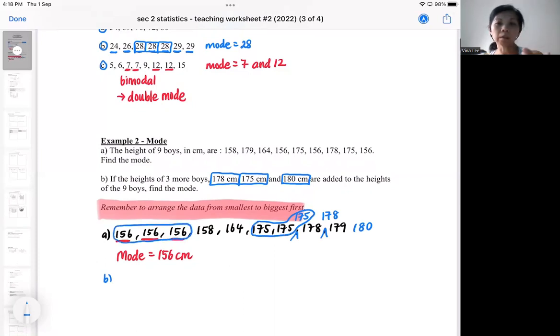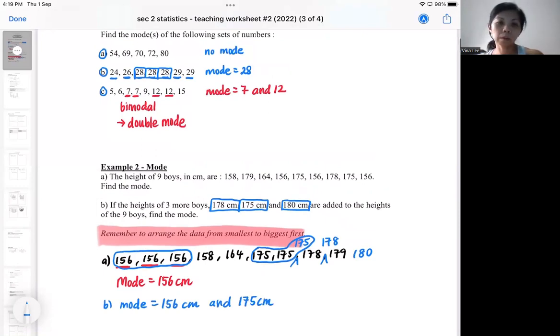Because of the additional three boys, right now we got two modes. So the modes will be the 156 and the 175. That is the idea of mode being the more popular ones. And then in order to enable you to see more easily, it's easier if you arrange it in ascending order from the smallest to the biggest.